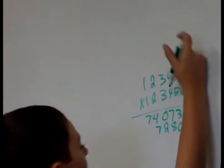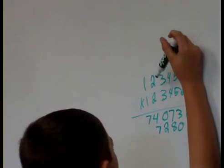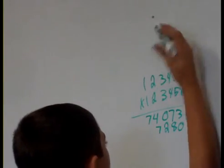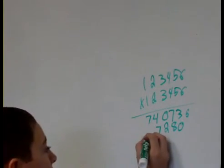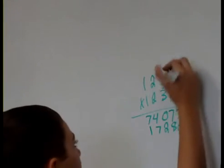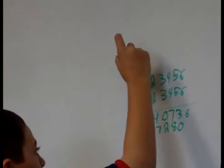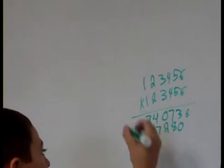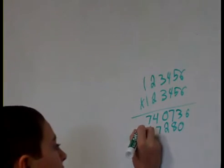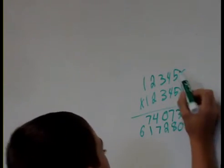And then, 5 times 2 is 10, plus the 1, which is 11. And then, 5 times 1 is 5, plus the 1 is 6. And then, you move it to the 4.